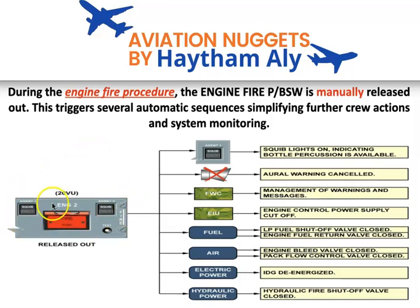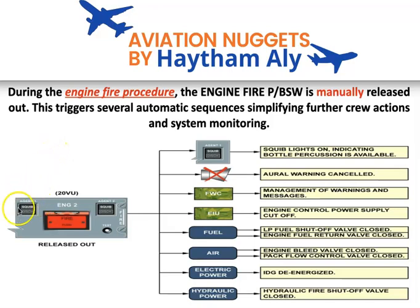From the agent push button. You need to remember that each engine in the Airbus A320 has two cartridge agents — agent one and agent two — and they are located in the pylon.